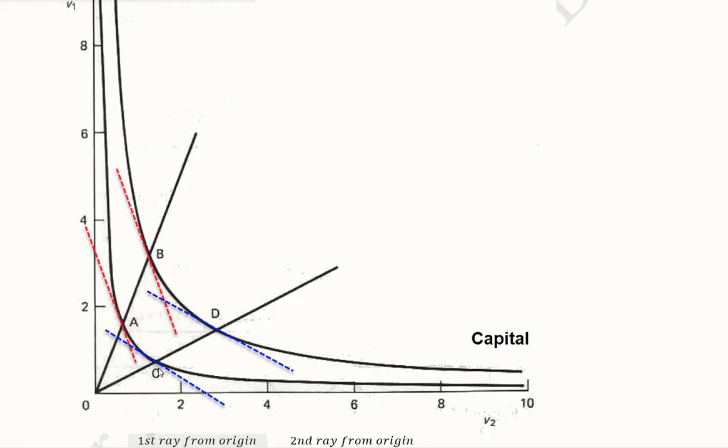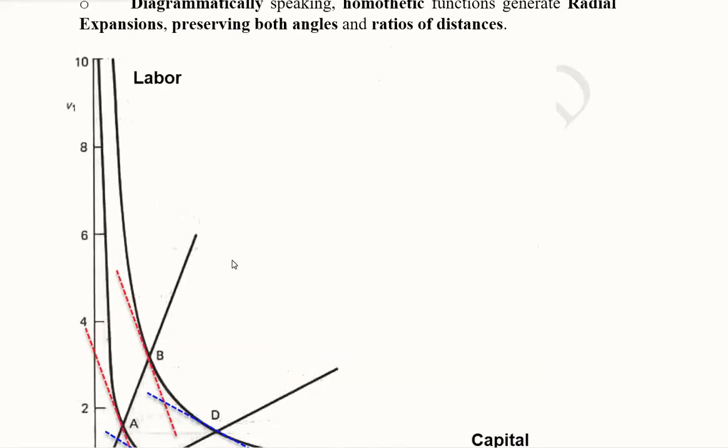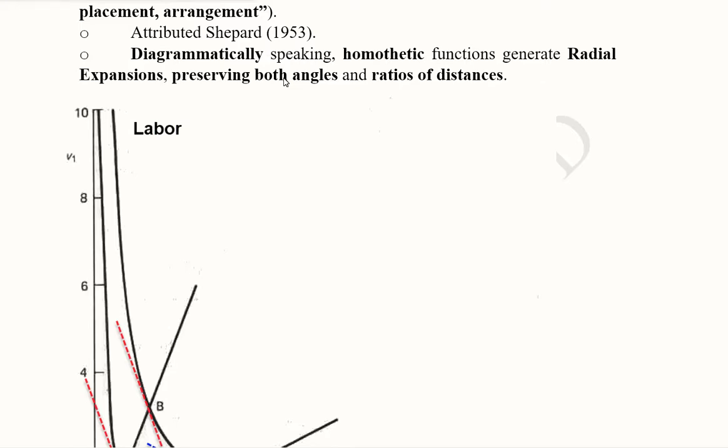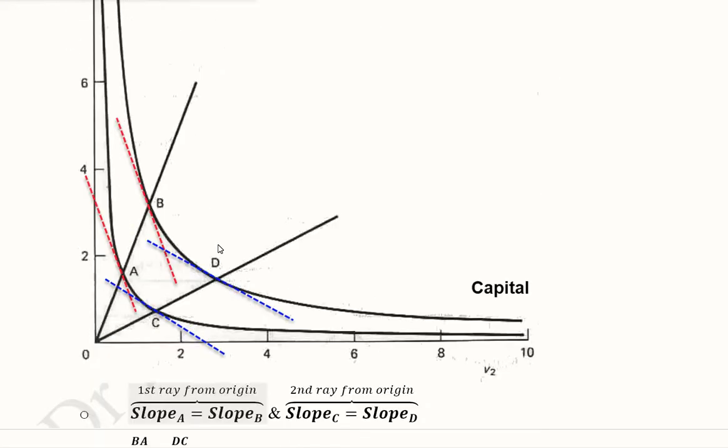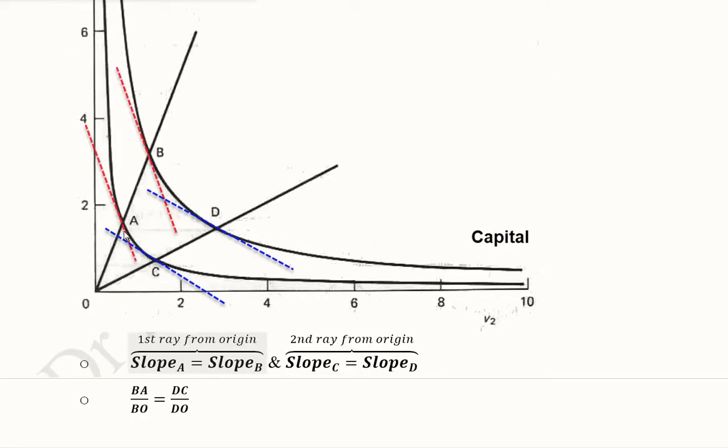The same can be observed from point C to D, where there is a blue line here as well as here showing the tangent or the slope of the isoquants. Both are parallel. This means the slope has been conserved, as mentioned, that the slope, or in other words angles, will remain the same. The ratio of distances is also likely to remain the same.